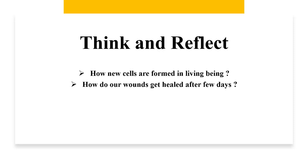How do our wounds get healed after a few days? When a person gets a wound, after 10 to 15 days that wound will be healed and only the scar on that place remains. What happened in these 15 days? The cells around the wound undergo a number of mitotic divisions. Because of those mitotic divisions, new cells are formed. Those new cells occupy the space of the wound and gradually the wound is filled with totally new cells. Finally, the wound gets healed.